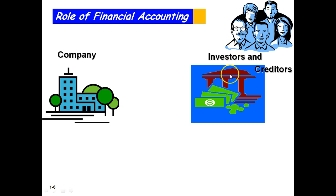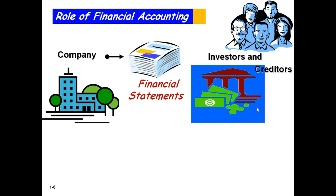We basically have our banks, which are our creditors, and our investors, which might be you and I, a corporate investor, or individuals. In order to make investing and lending decisions, investors and creditors need useful information. The company is responsible for generating the financial statements, which are one significant piece of that information. The financial statements contain relevant economic information that is both useful in making decisions and reliable, meaning you can count on it. So investors and creditors study the financial statements to make their investing and lending decisions.